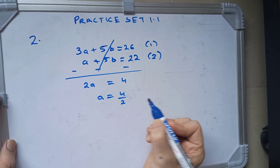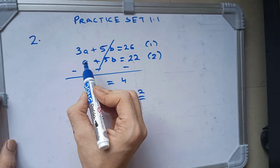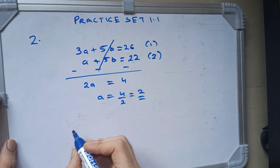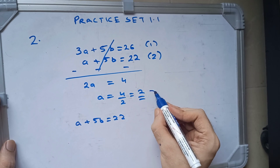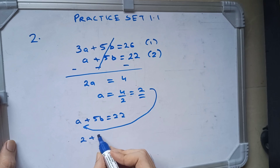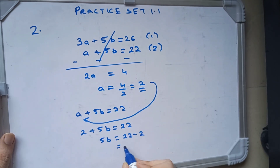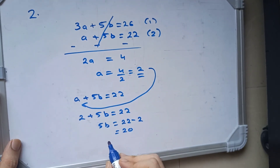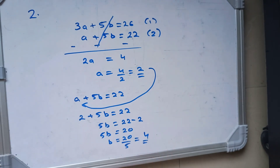a is equal to 4 upon 2, therefore a value is 2. Now we will substitute this value of a in one of the equations: a plus 5b is equal to 22. Here a value is 2, so 5b is equal to 22 minus 2, which is equal to 20. 5b is 20, therefore b is 20 by 5, which is 4. So we've got the answer to both equations.